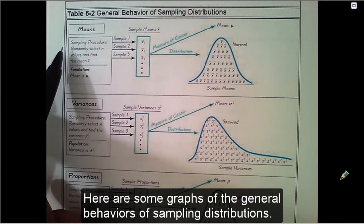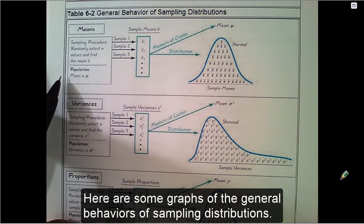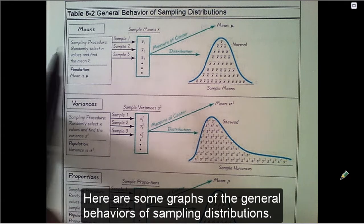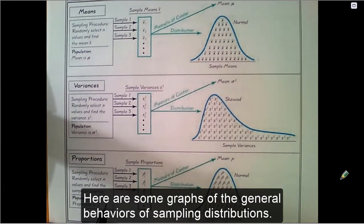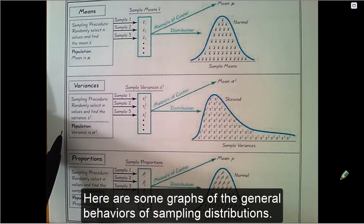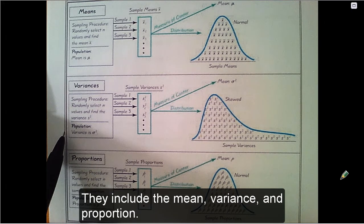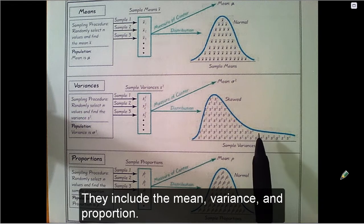Here are some graphs of the general behaviors of sampling distributions. They include the mean, variance, and proportion.